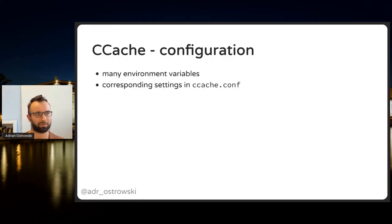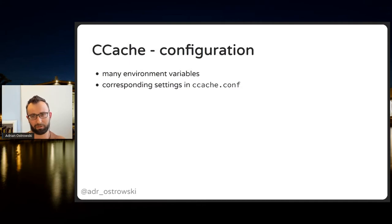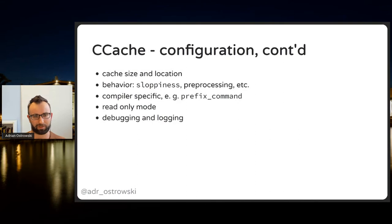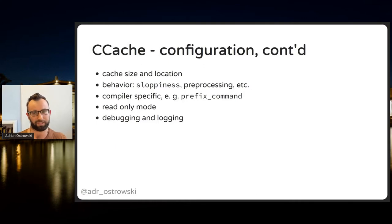There are two ways to configure Ccache: through environment variables or a configuration file. I recommend the latter, but in most cases default values work well. Key settings include cache size and location — by default it's just 5 gigabytes, which may not be enough for larger projects, especially when building with debug symbols.